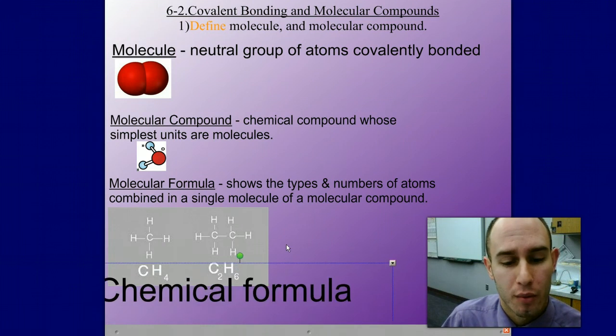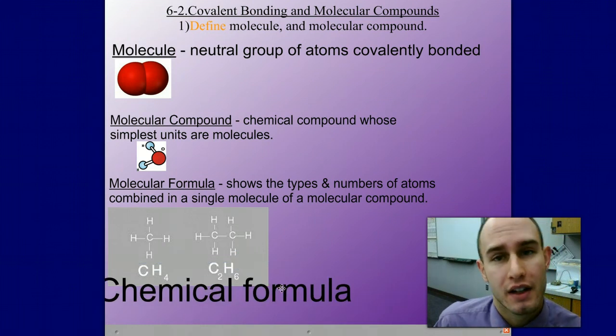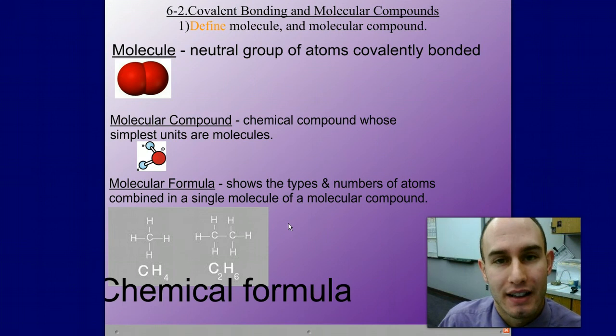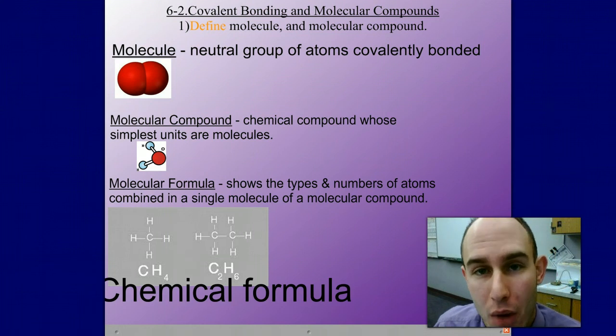If you don't know the definition of a chemical formula, basically it is the simplest way to represent atoms bonded together. These little numbers are our subscripts and those tell us how many atoms are in that molecule.